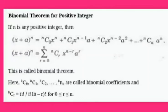In this video, we will see the binomial theorem for positive integer and its properties. If n is any positive integer, then for two terms x and a, x plus a whole power n is equal to nc0 x power n plus nc1 x power n minus 1 into a power 1 plus nc2 into x power n minus 2 a squared plus etc. The last term will be ncn a power n.